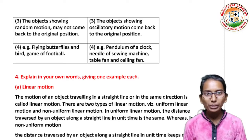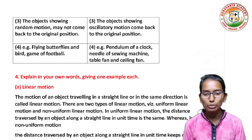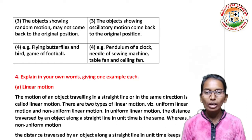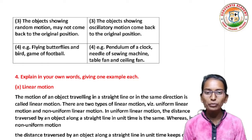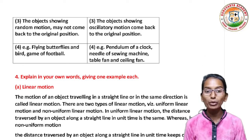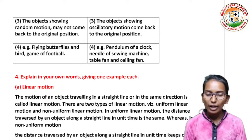The object showing oscillatory motion comes back to the original position. Examples of random motion: flying butterflies and birds, game of football. Examples of oscillatory motion: pendulum of a clock, needle of a sewing machine, table fan and ceiling fan.